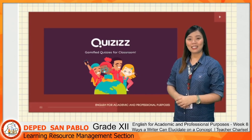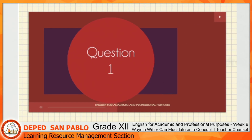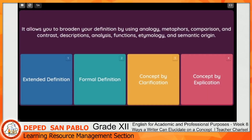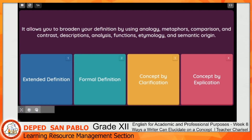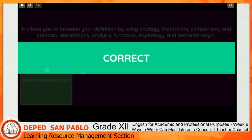Time's up! Let's see what you already know in this lesson. Question number one: It allows you to broaden your definition by using analogy, metaphors, comparison and contrast, descriptions, analysis, functions, etymology, and semantic origin. The choices are extended definition, formal definition, concept by clarification, or concept by explication. The correct answer is extended definition.